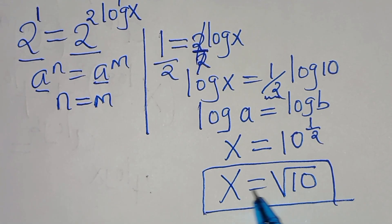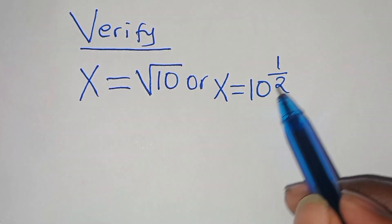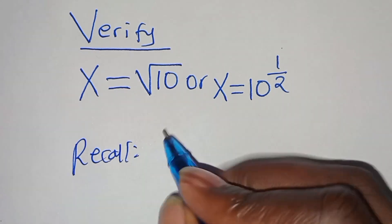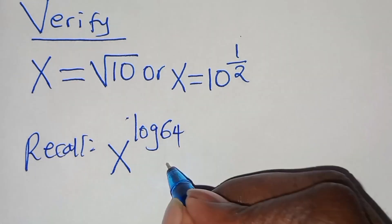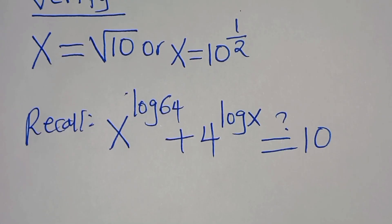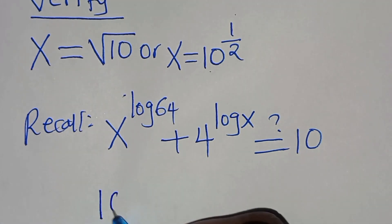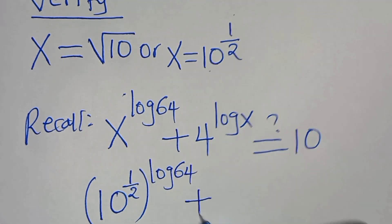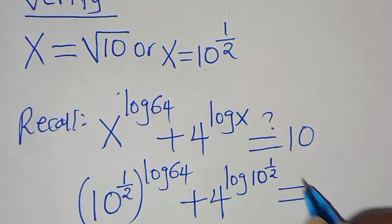Now we verify that x equals the square root of 10 (i.e., 10^(1/2)) satisfies the original equation. Substituting into x^(log 64) + 4^(log x), we get (10^(1/2))^(log 64) plus 4^(log(10^(1/2))), which should equal 10.